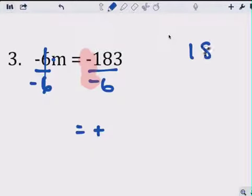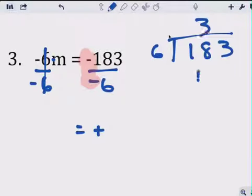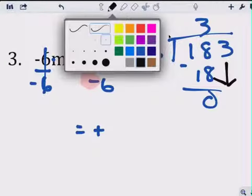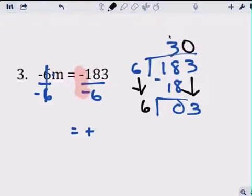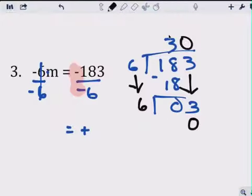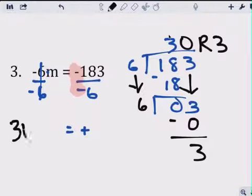That's 3, 18, 0, bring down this 3, bring down that number, you need to also bring down the number outside, can't go in, you have to put a 0. Okay, 0 goes here, and there's no more number to bring down, so my answer is remainder 3. The answer is 30.